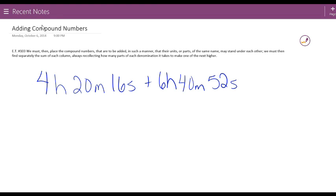That's really what we're talking about in compound numbers. In Elementary Treatise Section 103, it says we must place the compound numbers that are to be added so that units of the same name may stand under each other. We must then find separately the sum of each column, always recollecting how many parts of each denomination it takes to make one of the next higher.